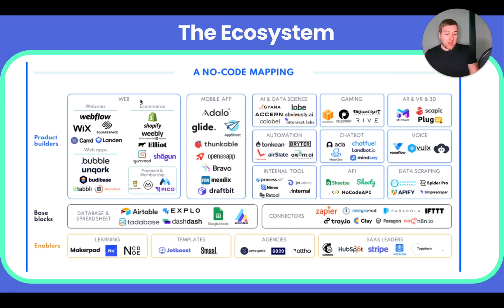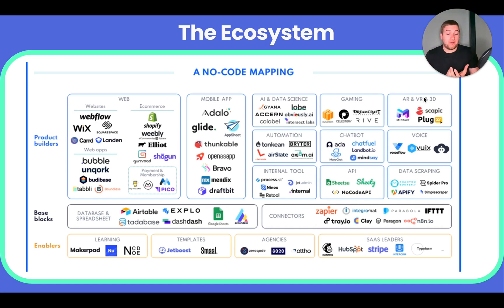This ecosystem picture gives you a guide of what can be done. You can build websites, web apps, e-commerce stores, but you can also look at AI and data science without coding using tools like Lobe, gaming with Buildbox or Celestory, 3D content with Scapic, and of course internal tools and automation for businesses — things like automating with Airslate, or building internal tools with Retool. All of these tools have unique capabilities, and when you put them together you can build almost anything you want without ever learning to write code.